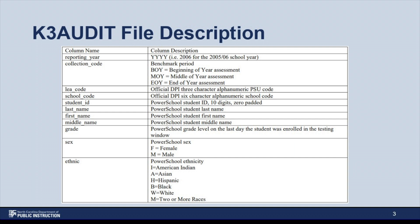We will now do a quick review of the K3 audit file description. This document was linked in the RTA DIBLS-8 Benchmark Assessment Data Verification Process document that was attached to the notification email. Many of the column names will be self-explanatory, such as LEA code, last name, and first name. Collection code represents the benchmark period, and grade represents the grade level in which a student was enrolled in PowerSchool on the last day of the benchmark assessment window.